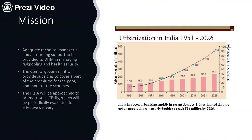The mission is technically managed and accounted for by district health management, and the central government provides subsidies in several forms to poor people. Programs are launched to promote various health services, which are periodically evaluated for effective delivery. You can see the urbanization trend in India from 1951 and forecasted figures, showing that India is urbanizing rapidly in recent decades.